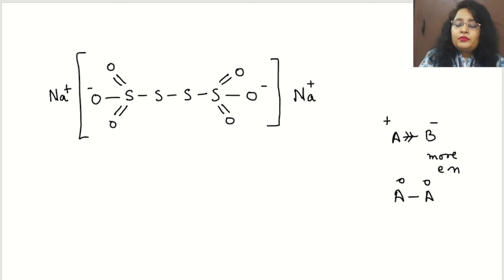So these two concepts we will use. First will be used in case of oxygen and sulfur. See, we can see easily sulfur is bonding with three oxygens. In the first case I can write it here: this is sulfur number 1, sulfur number 2, sulfur number 3, and sulfur number 4.